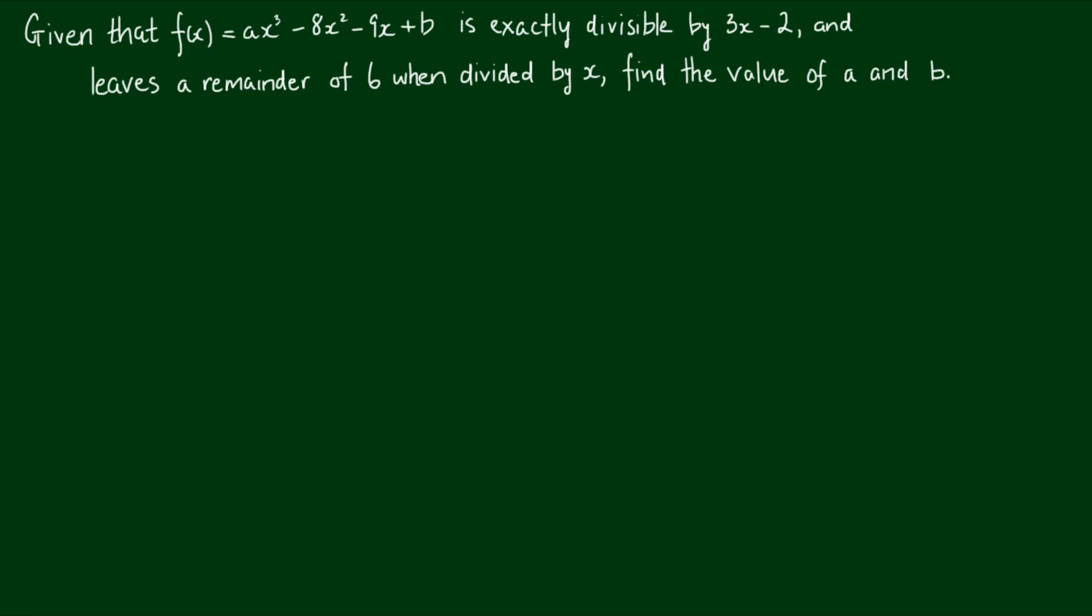Okay, so here's a problem that you might come across in your studies of polynomials. Given that f(x) equals ax cubed minus 8x squared minus 9x plus b is exactly divisible by 3x minus 2 and leaves a remainder of 6 when divided by x, find the value of a and b.